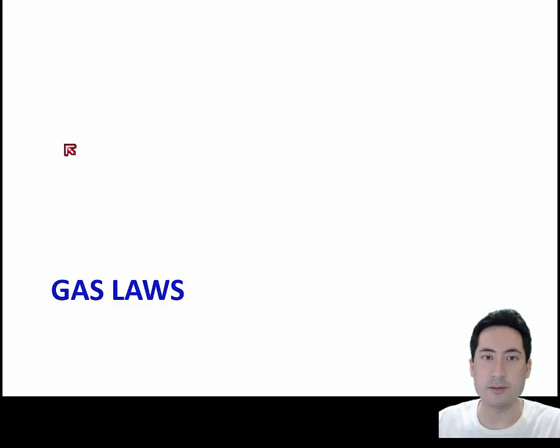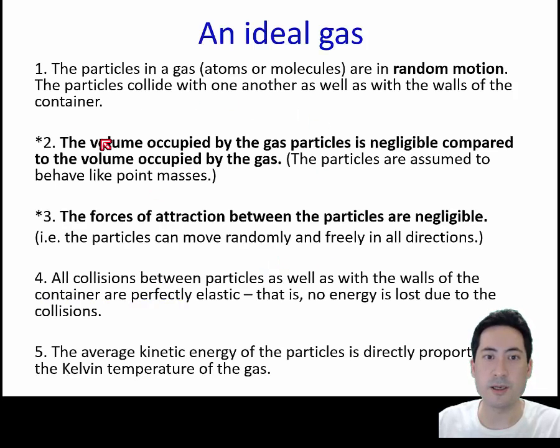Now we move into the gas laws, which we're going to combine. The first assumption is we have an ideal gas, which means the particles are in random motion. The volume occupied by the gas particles is negligible compared to the volume occupied by the gas, which means it's mainly space. There's no forces of attraction between the particles. All collisions between the particles and the walls are perfectly elastic, and the average kinetic energy of the particles is directly proportional to the Kelvin temperature of the gas.